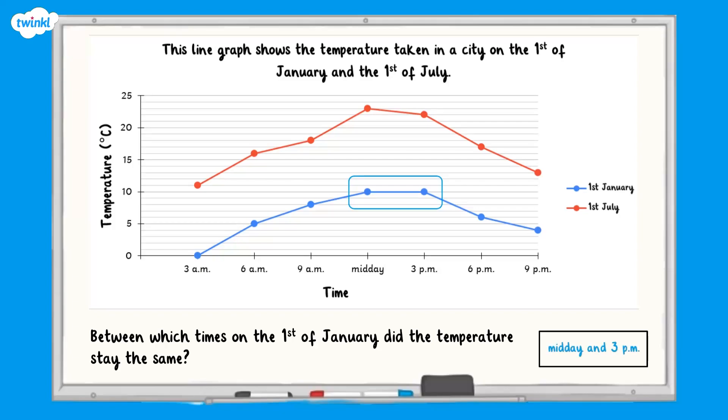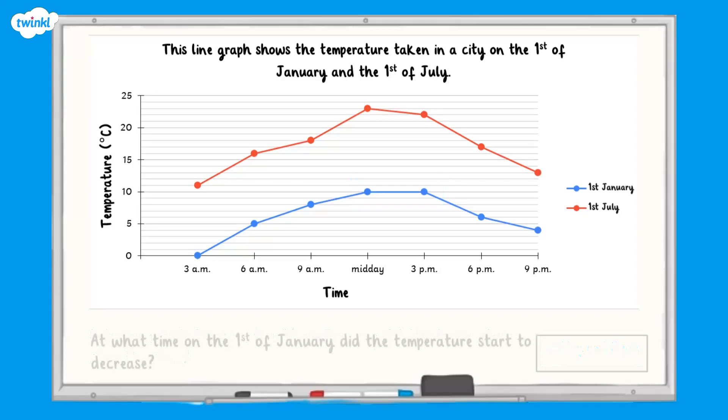At what time on the 1st of January did the temperature start to decrease? Pause here and see if you can answer this question. We can look at the line and see that it starts to go down at 3pm. So our answer is 3pm.